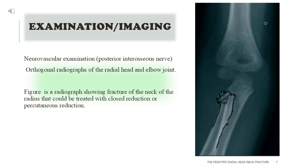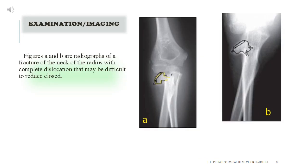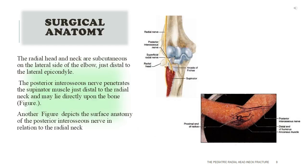Examination and imaging: neurovascular examination of the posterior interosseous nerve, and orthogonal radiographs of the radial head and elbow joint. Figures show a radiograph of a radial neck fracture treatable with closed or percutaneous reduction, and radiographs of a fracture with complete dislocation that may be difficult to reduce closed. The radial head and neck are subcutaneous on the lateral side of the elbow, just distal to the lateral epicondyle. The posterior interosseous nerve penetrates the supinator muscle just distal to the radial neck and may lie directly upon the bone.